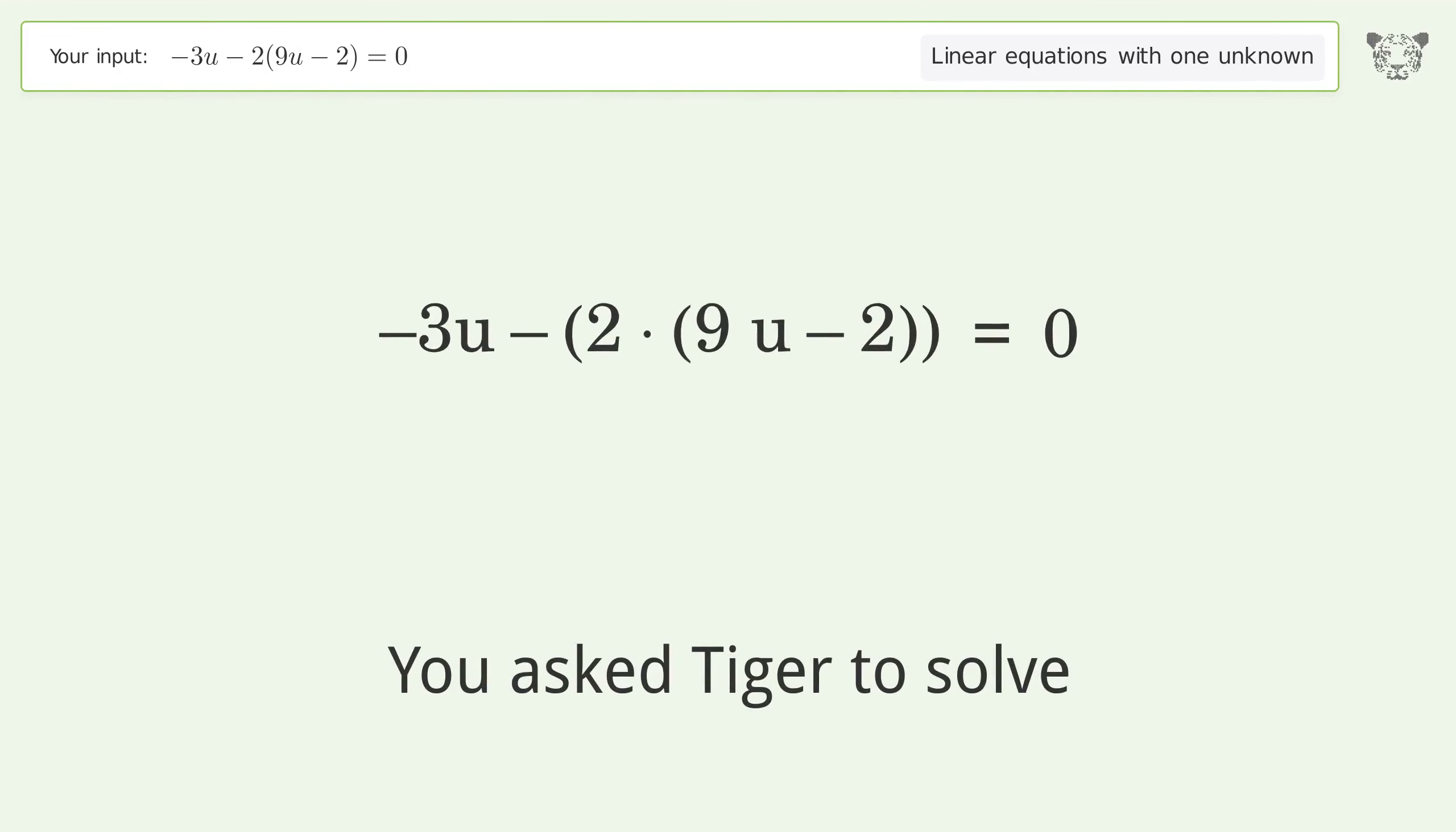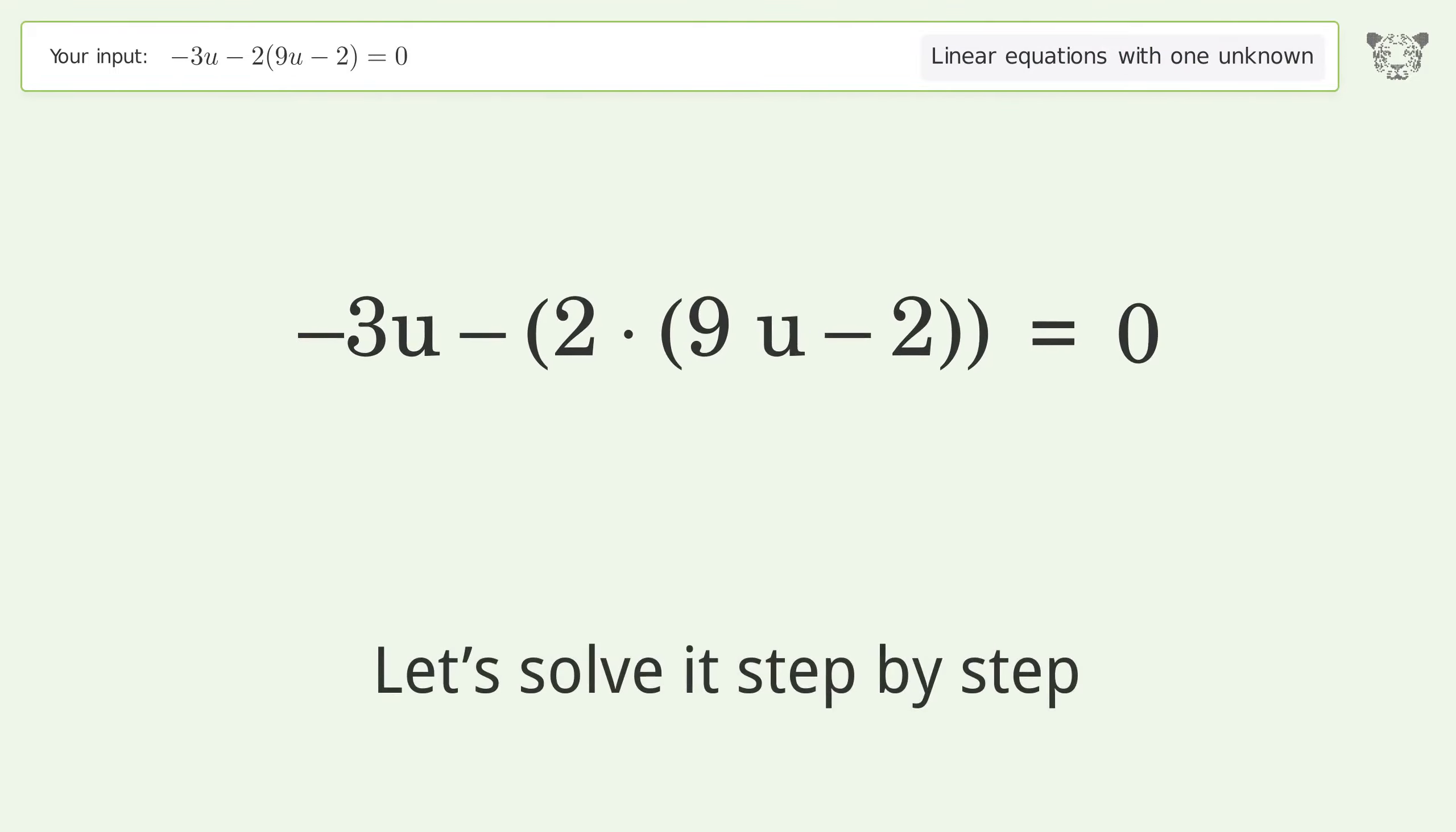You ask Tiger to solve this. It deals with linear equations with one unknown. The final result is u equals 4 over 21. Let's solve it step by step. Simplify the expression, expand the parentheses.